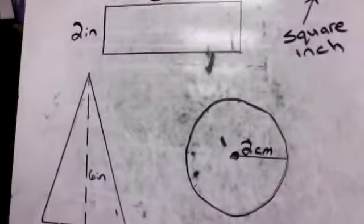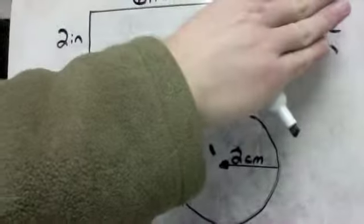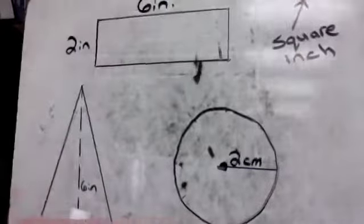All right, we've got three distinct shapes here. Ignore this for now. We've got a rectangle, a triangle, and a circle.